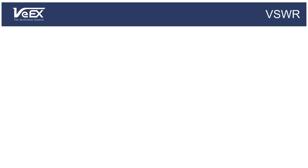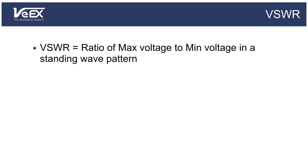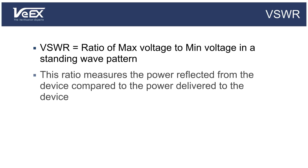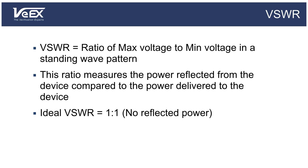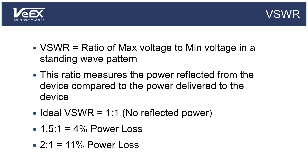The last parameter to take into account is the antenna's voltage standing wave ratio, or VSWR for short. It is defined as the ratio of the maximum voltage to the minimum voltage in a standing wave pattern. In simpler terms, it is the ratio measuring the power reflected from the device compared to the power delivered to the device. This reflection is caused by an impedance mismatch between the load, or the antenna, and the power source. Wi-Fi antennas have an impedance of 50 ohms. An ideal antenna has a VSWR of 1 to 1, which means no reflected power and perfect impedance matching. Most commercial antennas have a VSWR range of 1.5 to 1 to 2 to 1, which is equivalent to a power loss of between 4 and 11%.